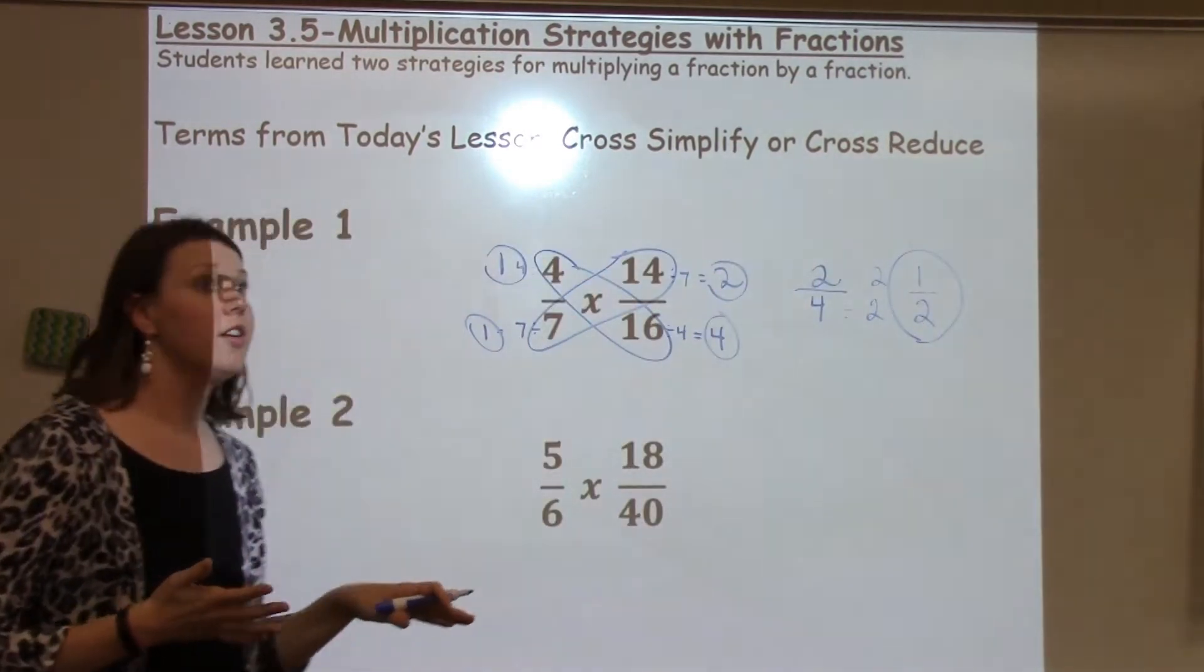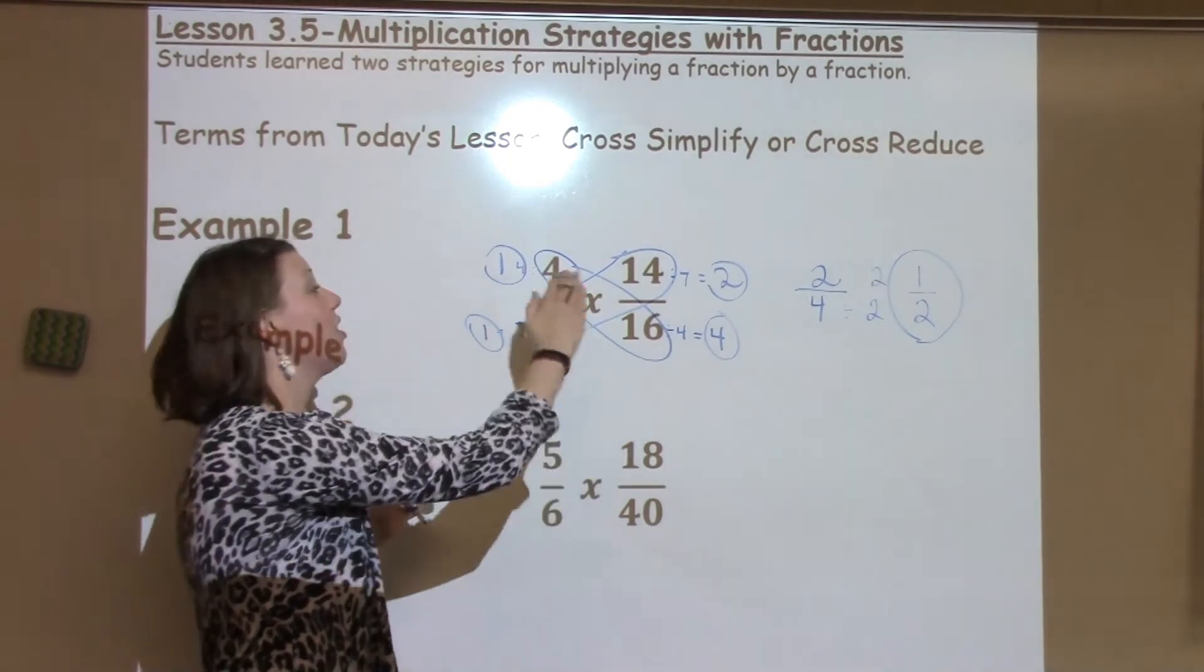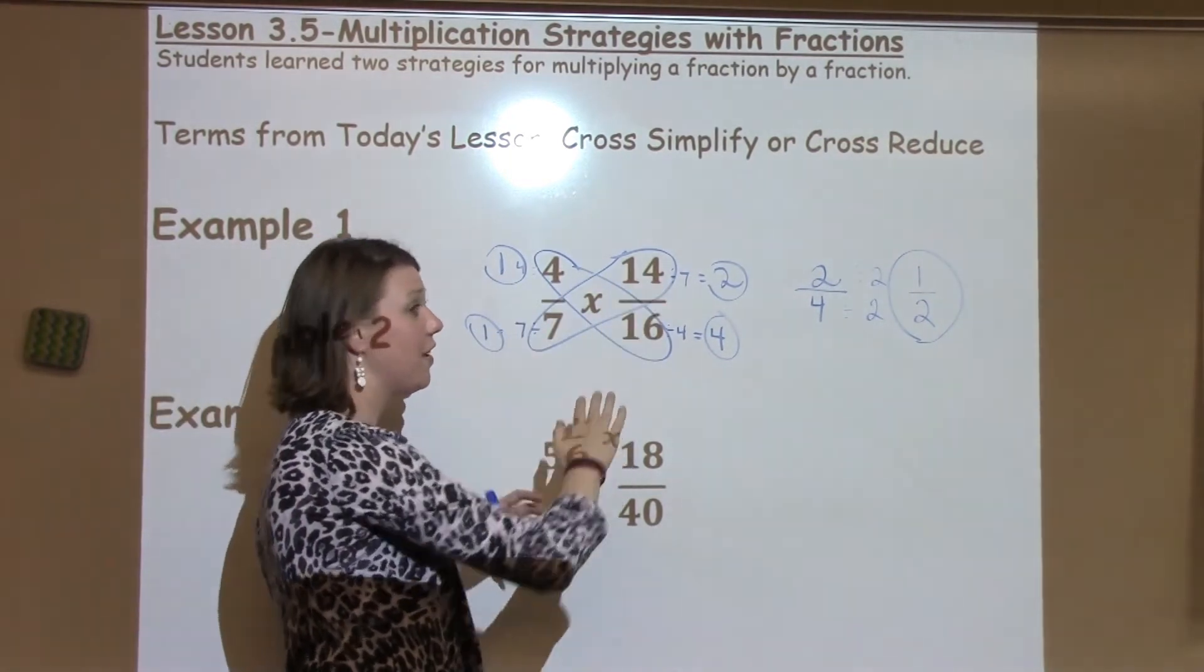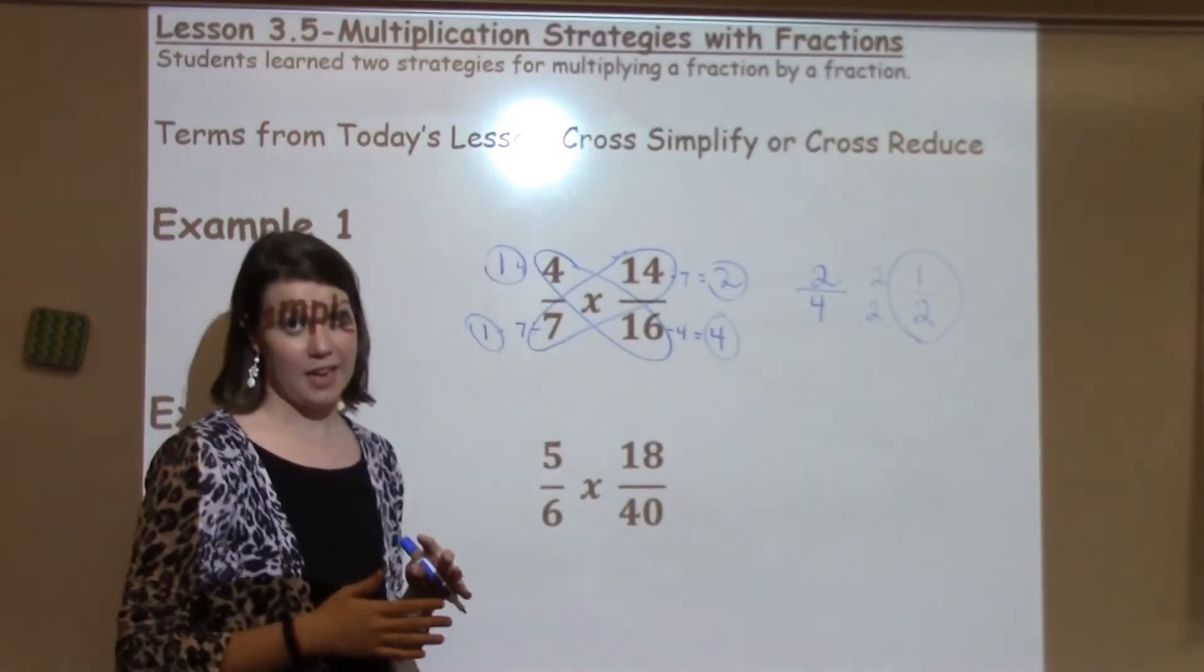Now, if your 5th grader doesn't see any factors that they share, they can, like I said, go ahead and multiply straight across on both of these. There's just going to be a lot more reducing involved.